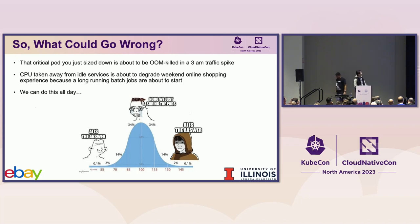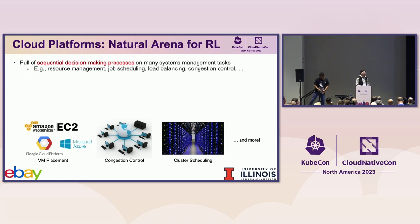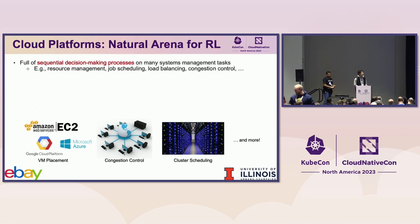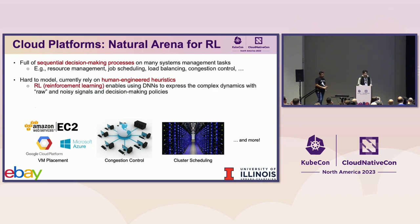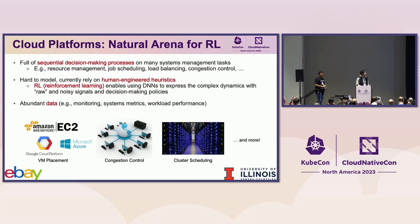Looking at cloud platforms, general resource management is everywhere — workload autoscaling, job scheduling, VM or container placement, congestion control. These problems have been around for a long time in theory and practice but remain significantly challenging. Currently most rely on human-engineered heuristics. On the other hand, learning-based approaches such as reinforcement learning allow us to use deep neural networks to express complex dynamics with raw and noisy signals. Learning-based approaches are viable because we have abundant data in modern cloud platforms: monitoring data, system metrics, and application performance metrics.